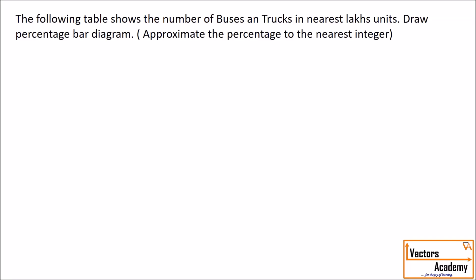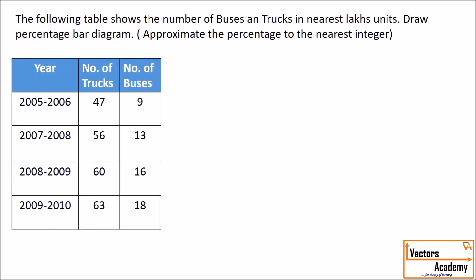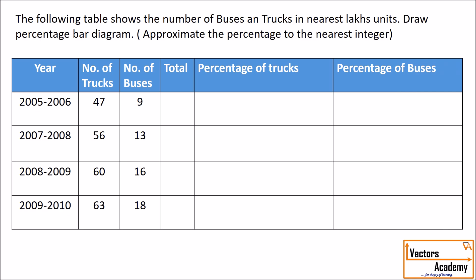The next type of bar diagram is a percentage bar diagram. Let's take an example. The following table represents the number of trucks and the number of buses for a particular year. To calculate the percentage bar diagram, we need three more columns: one is the total, the other is percentage of trucks, and the last one is percentage of buses.